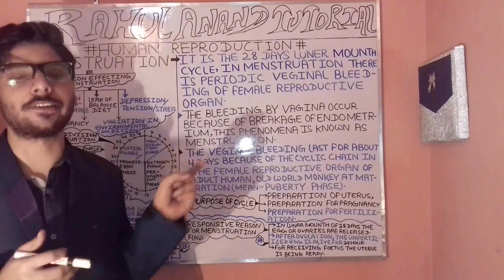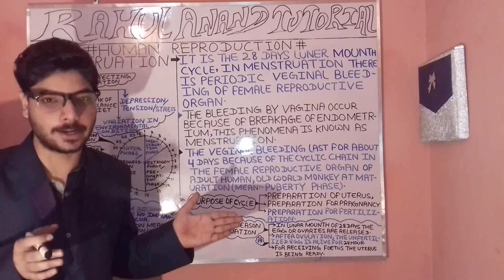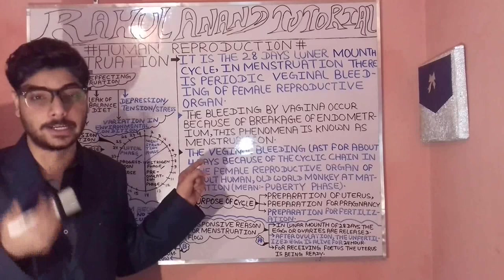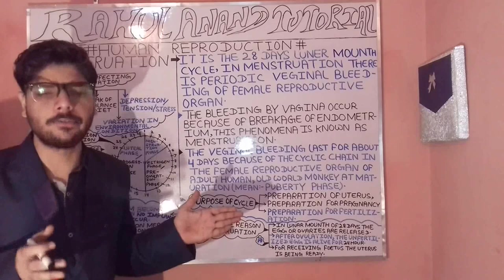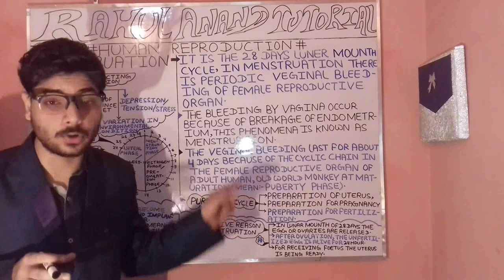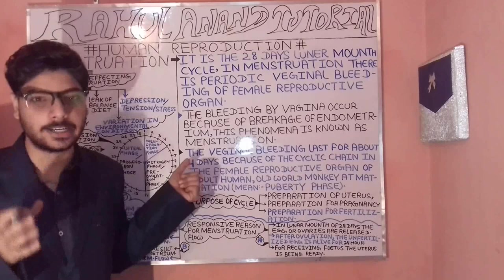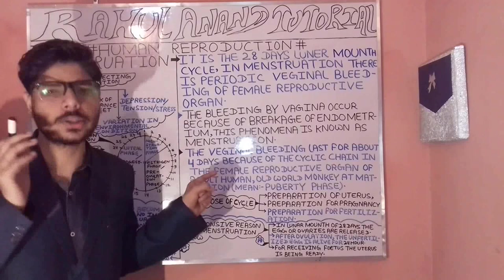Now let's understand the factors affecting menstruation. These include weak health status, pregnancy, lack of a balanced diet, and variation in environmental conditions — such as cold environments, hot environments, and rainy seasons. These all play an important role in influencing the menstruation cycle.